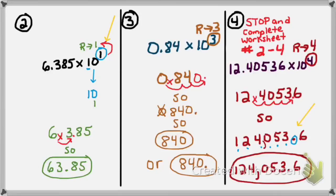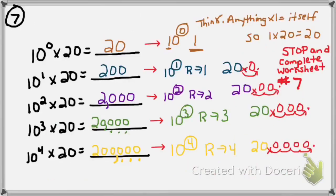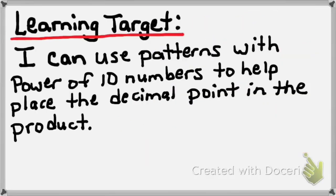When your answer has a decimal and you need to put commas in, start at the decimal and count 3 places to the left for each comma. When you see a pattern problem, it's really just smaller separate problems. Remember that 10 to the 0 power equals 1. So hopefully now you can confidently say: I can use patterns with powers of 10 numbers to help place the decimal point in the product. Greater means move it to the right the number of zeros; less than means move it to the left the number of zeros. Good luck with this lesson!